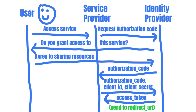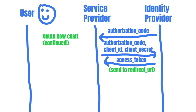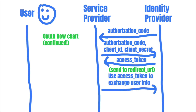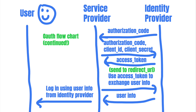The service provider will also specify a URL where the identity provider should send the access token. The identity provider will send back an access token, which can be used to access the user's resources. The service provider will then retrieve the user's information associated with that access token and log that user in.